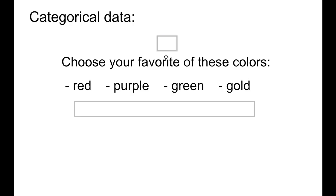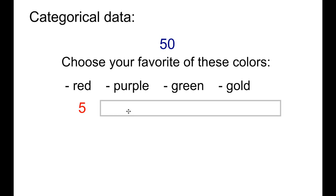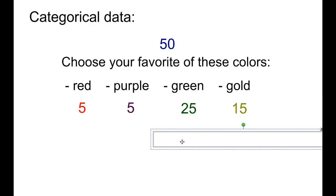Let's say that we asked 50 people, and of those 50 people, five of them said red, five said purple, 25 said green, 15 said gold. This survey may have been taken in Green Bay, Wisconsin.